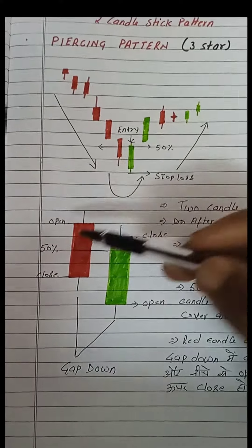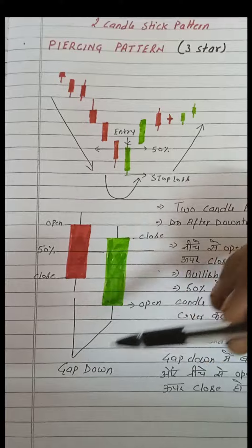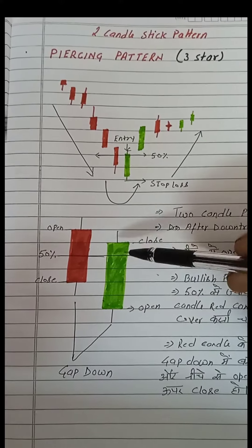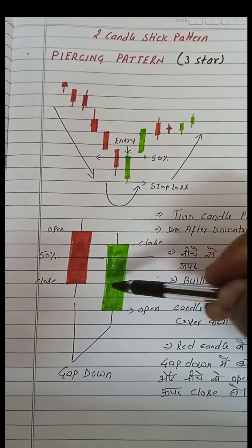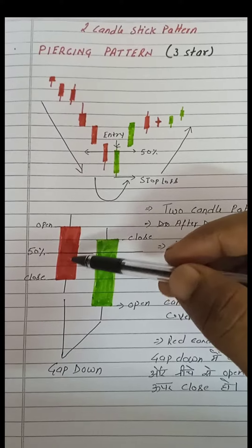You can see that there is a pattern like this: red candle, after the gap down, green candle, which is open and close. And the condition is that the green candle, the red candle is covered by 50%.